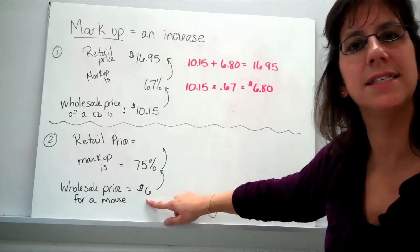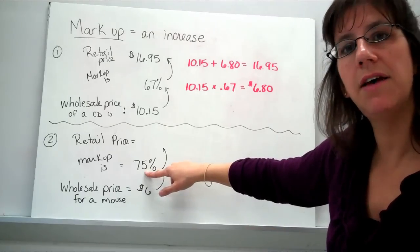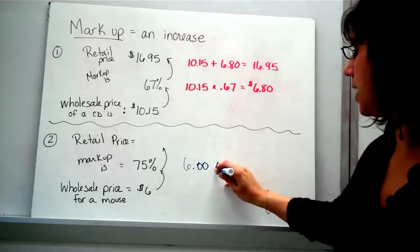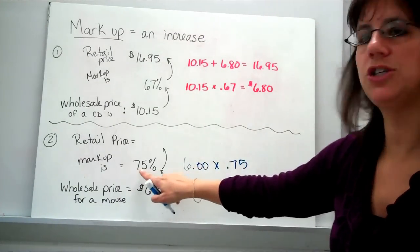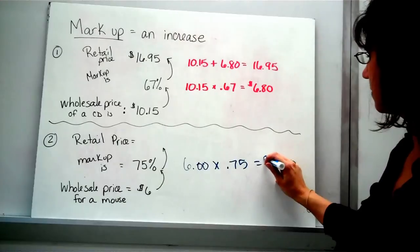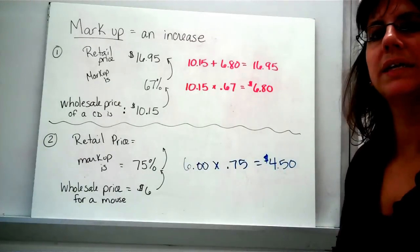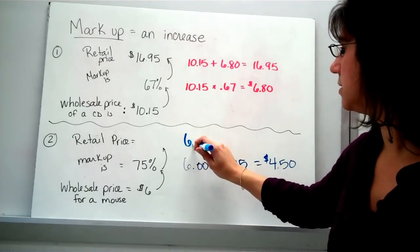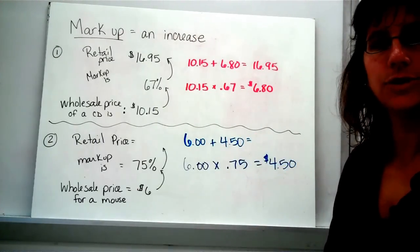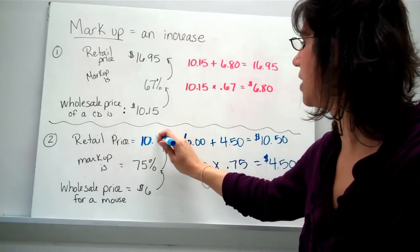Alright, the wholesale price for this mouse is $6.00. They're going to make a profit. They want to try to increase the price 75% so that they can make some money. So here's how you do that: $6.00 times .75. Notice I changed the percent to a decimal. When you do that, did you get $4.50? That's how much money they are going to make on the mouse. So since it's a markup, we're going to add. Take the price that it started at and add the $4.50. Did you get $10.50 for your retail price? I hope so. So that's how much they are going to sell it to you for.